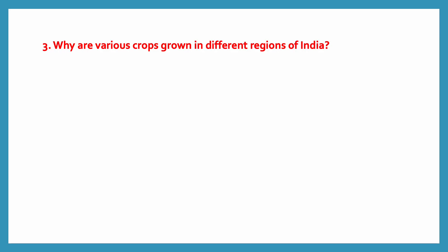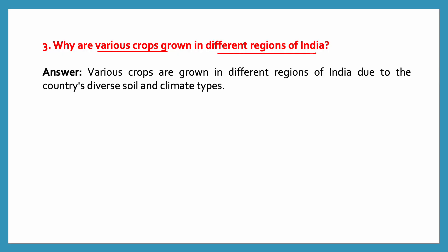Why are various crops grown in different regions of India? Various crops are grown in different regions of India due to the country's diverse soil and climate types. The cultivation of crops depends upon the type of soil and the type of climate.